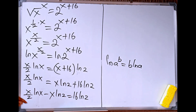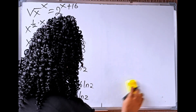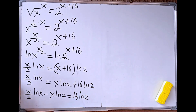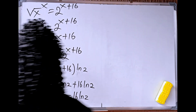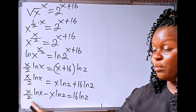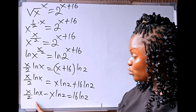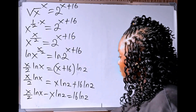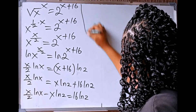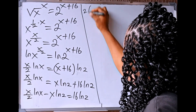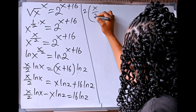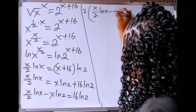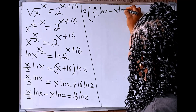Let's transpose this. We are going to have x divided by 2 times ln of x minus x ln of 2 equals 16 ln of 2. Now, from here, you can see there is a denominator of 2. So we have to remove this denominator by multiplying through by 2.